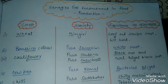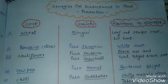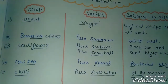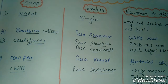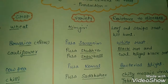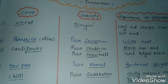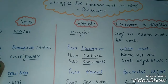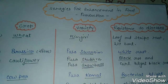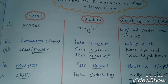Hello guys, welcome to this video. This is an important video for NEET because this type of question is important. The last two videos have been linked in the description, and this is the third video on important NEET questions. This is the chapter strategy for Enhancement in Food Production, Biology Class 12.